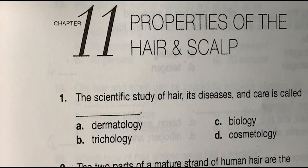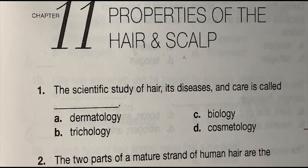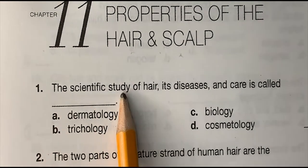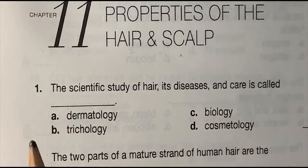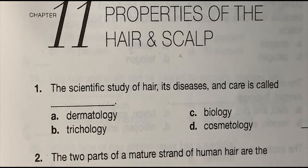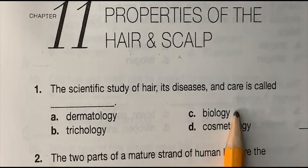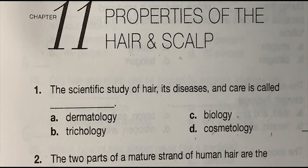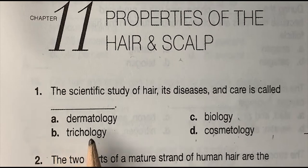Chapter 11: Properties of the Hair and Scalp. Number one: the scientific study of the hair, its diseases and care is called — (a) dermatology, (b) trichology, (c) biology, or (d) cosmetology. The correct answer is (b) trichology.